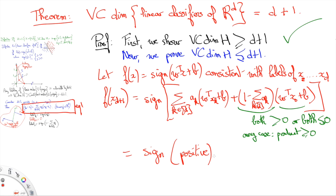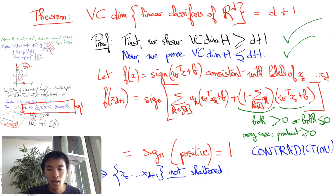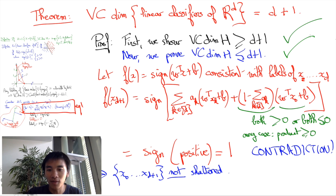The conclusion is that f necessarily predicts x_{d+1} will have label 1. This contradicts the label x_{d+1} was actually given, hence proving that no linear classifier yields the imposed labeling of the d+2 points. This proves that sets of d+2 points are not shattered, and hence that the VC dimension of linear classifiers is less than d+2. Overall, we've proved the VC dimension is less than d+2 but at least d+1, and combining these results proves that the VC dimension is exactly equal to d+1. QED.